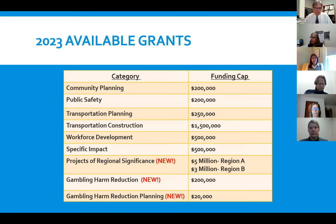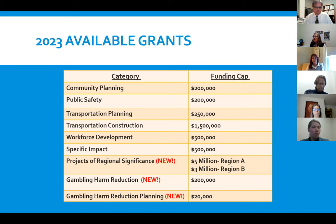Different projects under community planning can total the funding cap — if you have a couple of different planning projects and each is $100,000, you can combine them, but the cap is $200,000. Next is the public safety grant, which we've raised from $100,000 to $200,000. Found in section 2.2 of the guidelines, it's used to supplement budgets of police, fire, EMS, and other public safety agencies impacted by the casinos.